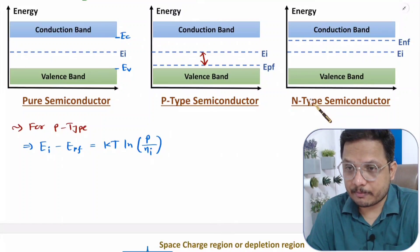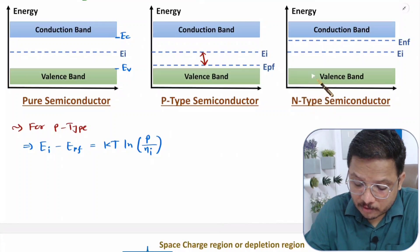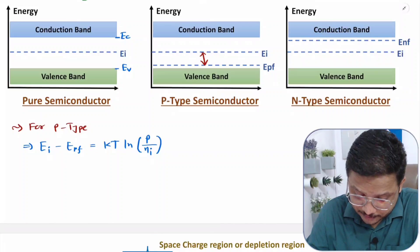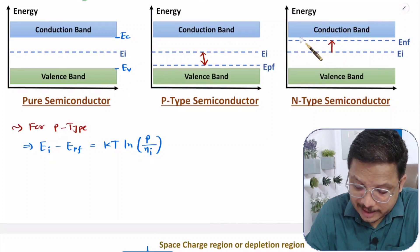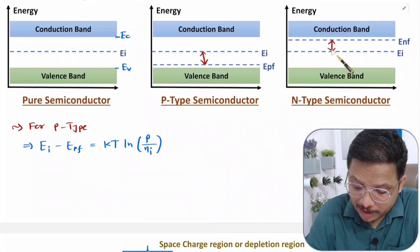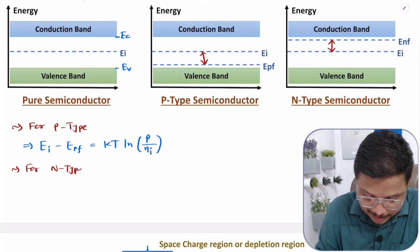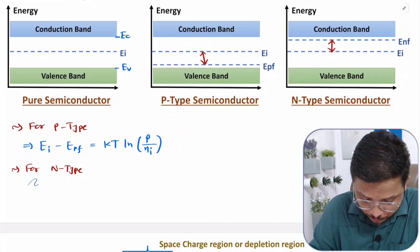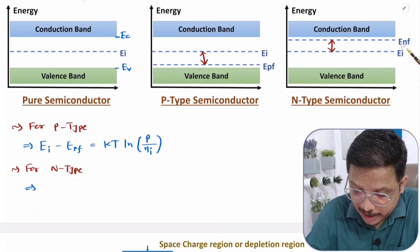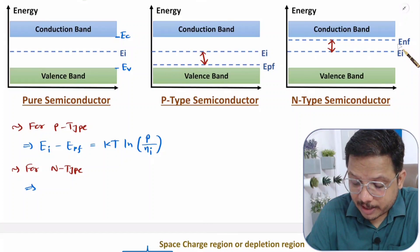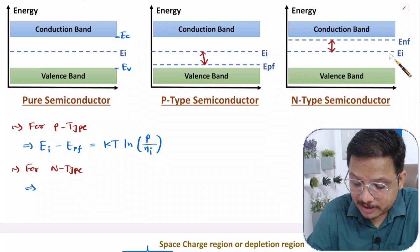By adding pentavalent impurities in pure semiconductor, we will be making N-type. So in N-type, if you observe, Fermi energy level is getting shifted towards the conduction band side. If you want to calculate how much shifting is happening, then for N-type we can calculate that. ENF is the Fermi energy of N-type, so ENF minus EI is how much shifting is happening.